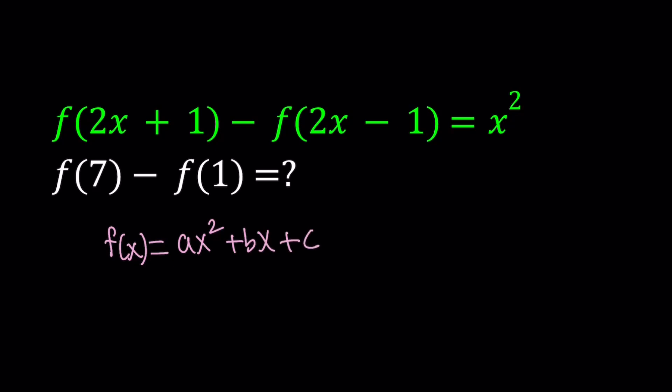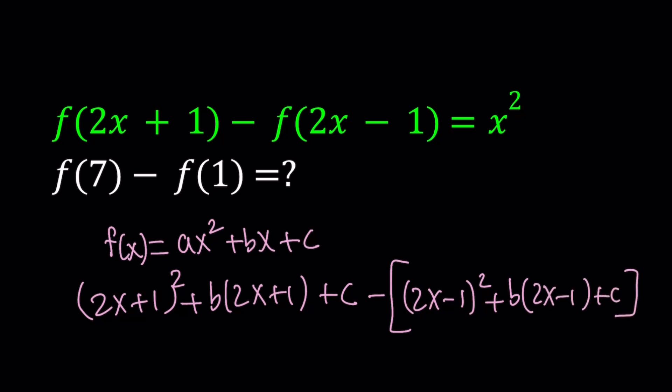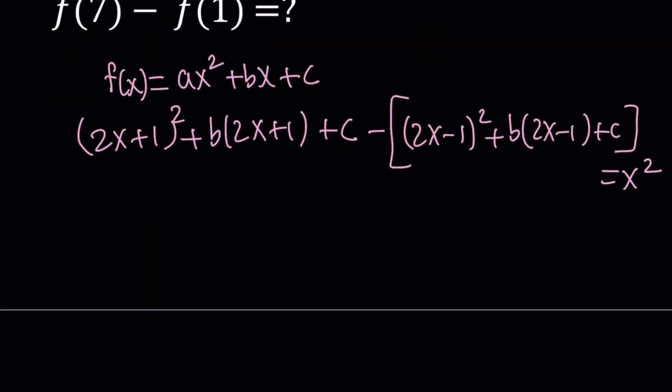When you evaluate f(2x+1), you just replace x with 2x+1. So c is not going to change. And then from that, let's subtract f(2x-1). Very similarly. And this is supposed to equal x². Is that possible? Let's test it out. Well, you're going to realize probably right away that when you subtract these two expressions, the x² is going to cancel out. So you're going to end up with no x². So that's not going to work. The x² cancels out.